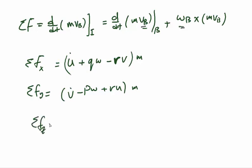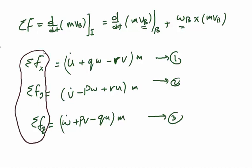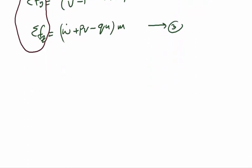This gives three force equations, and as stated, the right-hand side contributions come from gravity, aerodynamics, and the propulsion system. Now let's move to the moments. The summation of moments equals the time rate of change of angular momentum with respect to the inertial axis, which equals d/dt with respect to body plus omega-body cross the angular momentum, which equals I times omega-dot.